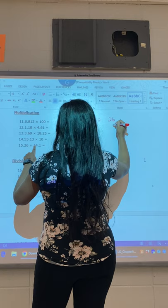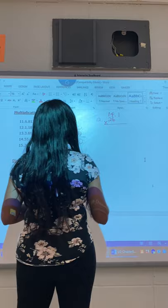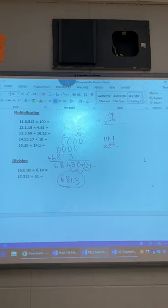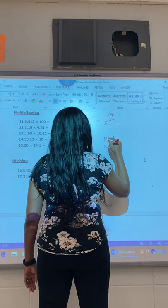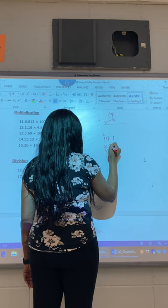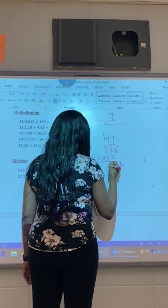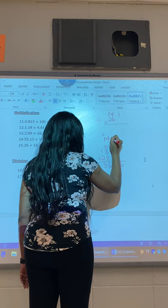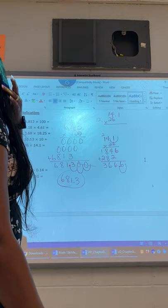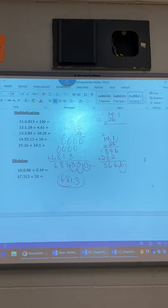Number 15 is 26 times 14.1. Now what I normally do is if I have a decimal and a whole number, you're going to write it like this and multiply it out. Six times one is six, six times four is 24 carry your two, six times one is six plus two is eight. Two times one is two, two times four is eight, two times one is two. Bring down your six. Four plus two is six, eight plus eight is 16 carry your one, and two plus one is three. You move your decimal one time, so the answer is 366 and 6 tenths.